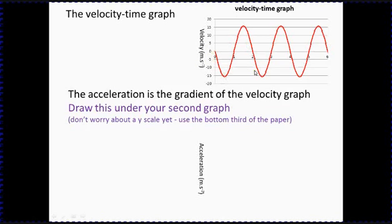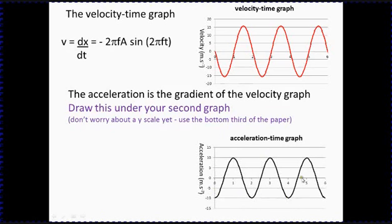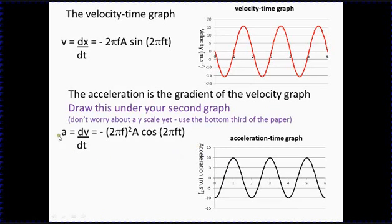To go from velocity to acceleration, we do exactly the same thing again. Remember that acceleration is the gradient of a velocity-time graph. Getting the gradient of the velocity-time graph gives us the acceleration-time graph shape. Notice the gradient at one point is a maximum negative value, shown at the bottom, and at another point the gradient is zero.